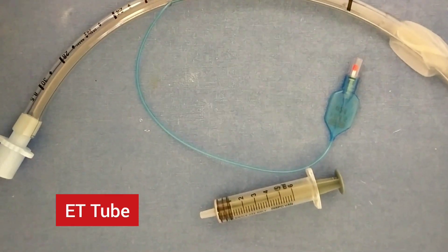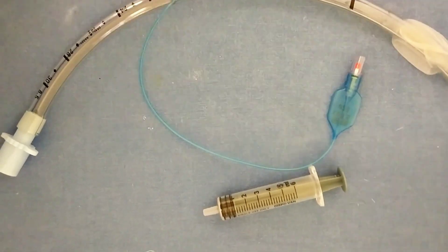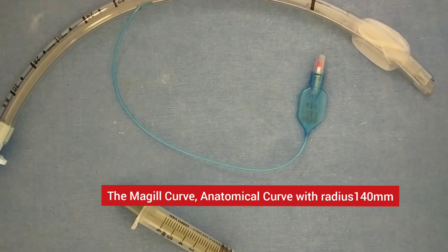A tracheal tube is a catheter that is inserted into the trachea for the primary purpose of establishing and maintaining a patient airway to ensure the adequate exchange of oxygen and carbon dioxide.